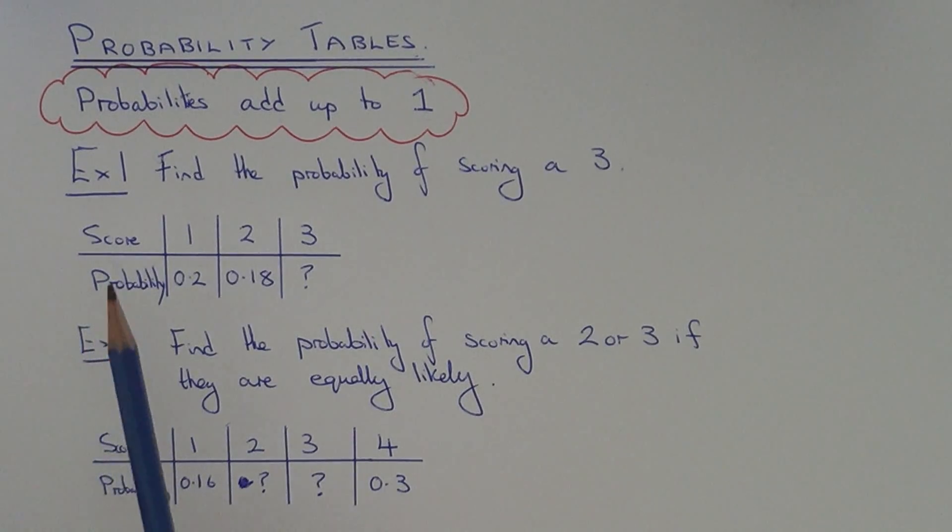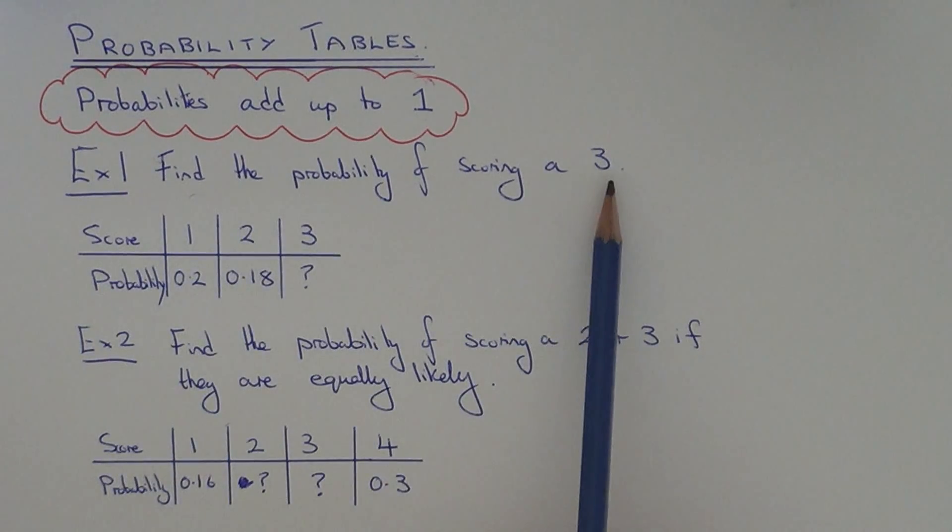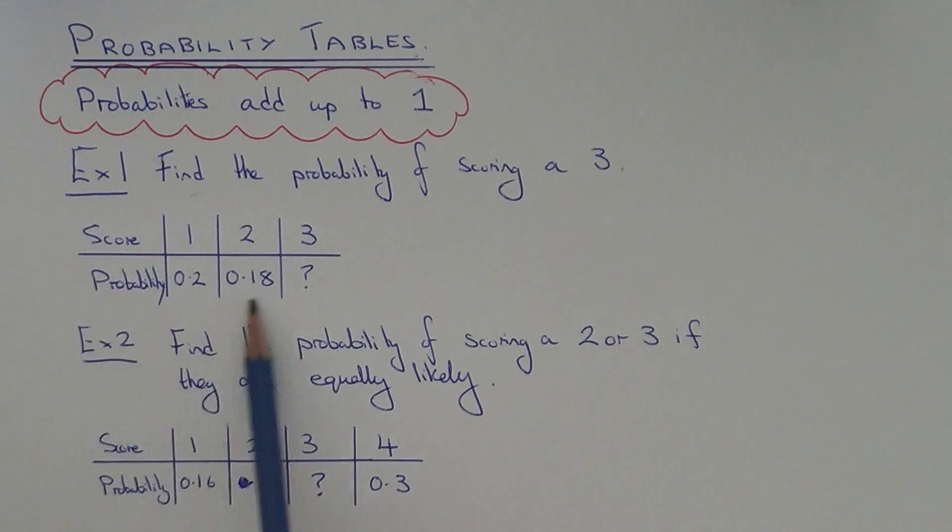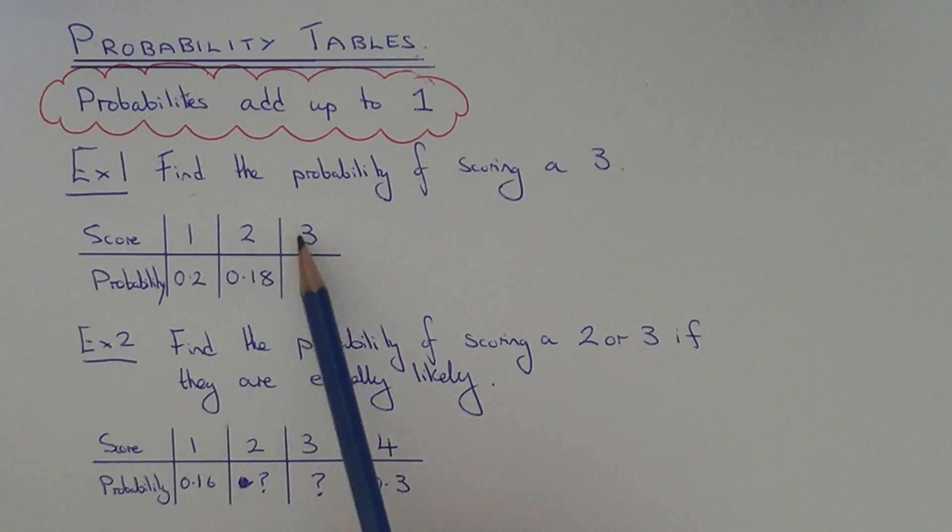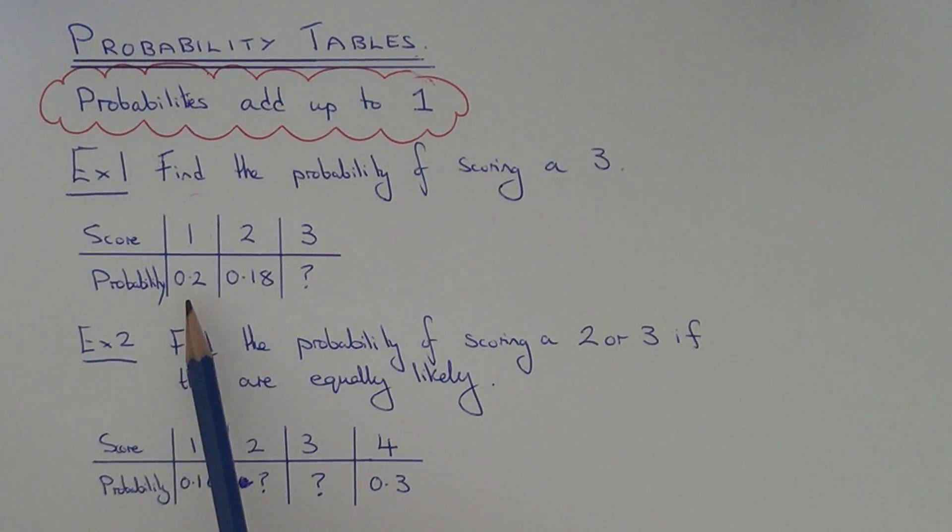So let's do the first example then. We've got to work out the probability of scoring a 3. So we've got a little table here, and it could be like a spinner where you can score numbers 1, 2 and 3. So the probability of scoring a 1 is 0.2, the probability of scoring a 2 is 0.18, and we need to find the probability of scoring a 3.